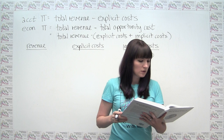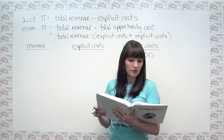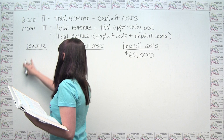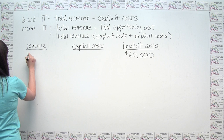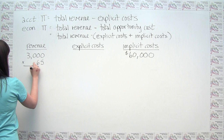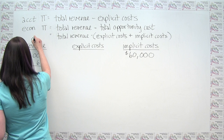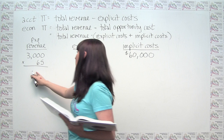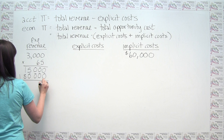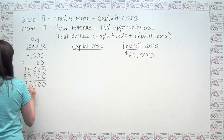Jared's shop charges $65 for a repair and last year the shop performed 3,000 repairs — that's money coming in, so it goes under revenue. Our quantity is 3,000 and our price is $65. Total revenue when selling all output at the same price is just price times quantity, so we multiply these numbers to get $195,000 of revenue.